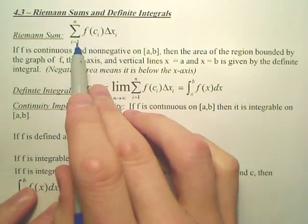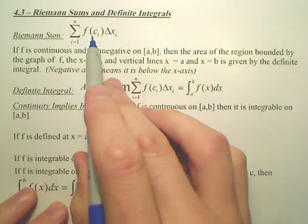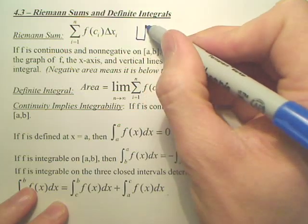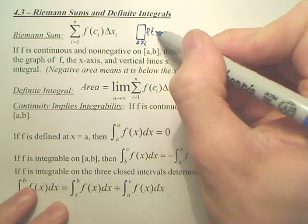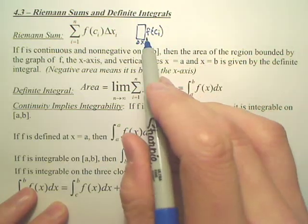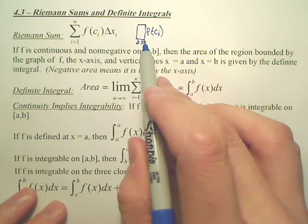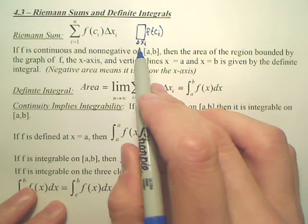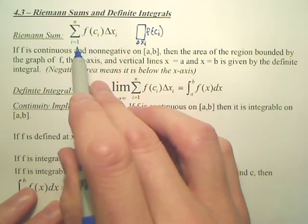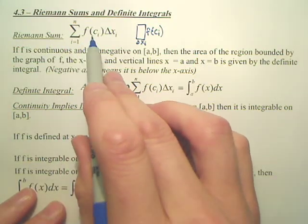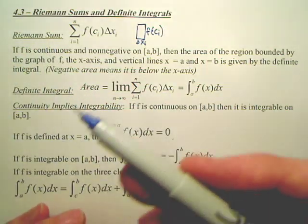This is called summation notation. I is where you start, N is how many intervals, F of C is the height of a rectangle. If you think of a rectangle, this is change of X, and this is F of C. For rectangles, you're going to be adding up rectangles under a curve. Area is going to be F of C times change of X. If there are seven rectangles, you go from one to seven finding the seven rectangles. This is the area of a rectangle — it's called a Riemann sum. You're summing up a whole bunch of rectangles to approximate an area.